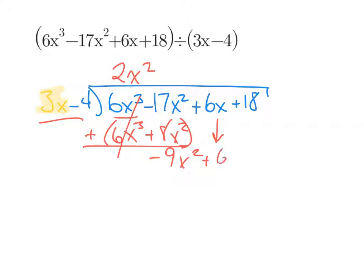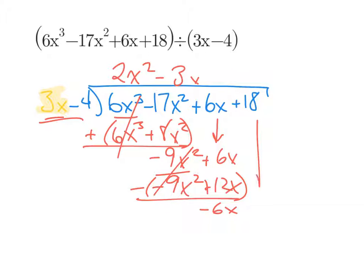Bring down the 6x and repeat the process. What do I multiply 3x by to turn it into negative 9x squared? Well, that would be negative 3x. So let's do that. 3x times negative 3x is negative 9x squared. Negative 3x times negative 4 is positive 12x. When we subtract the whole thing, the negative 9x squareds cancel. But 6 minus 12 is negative 6x.